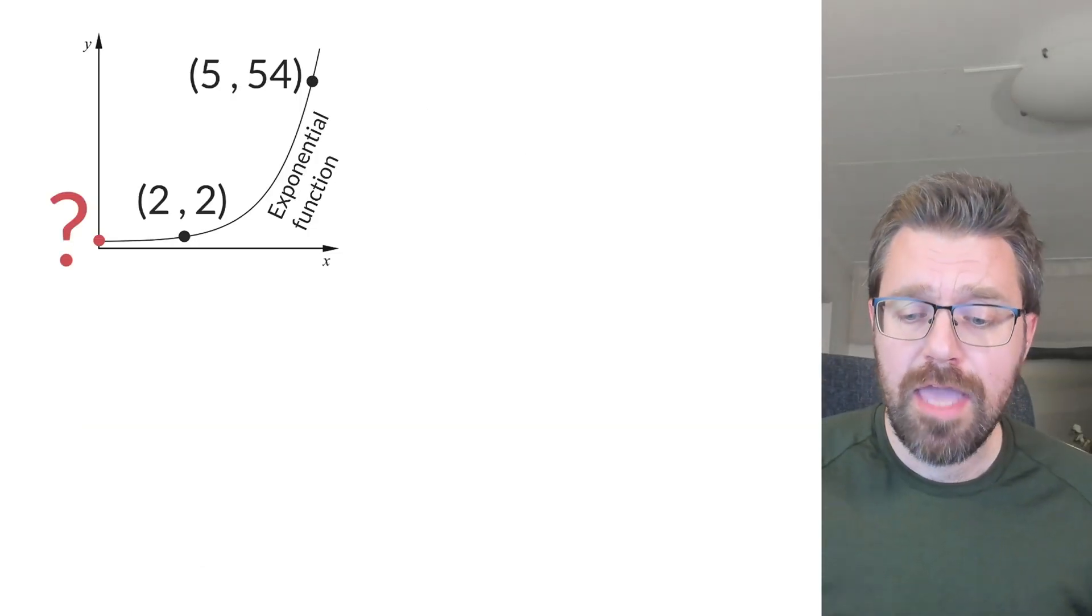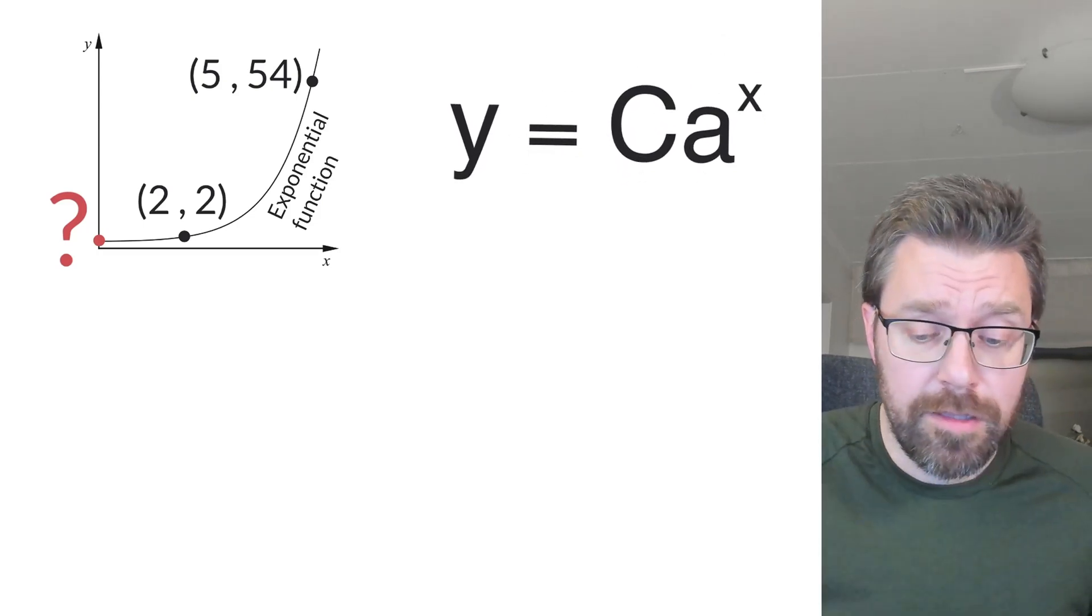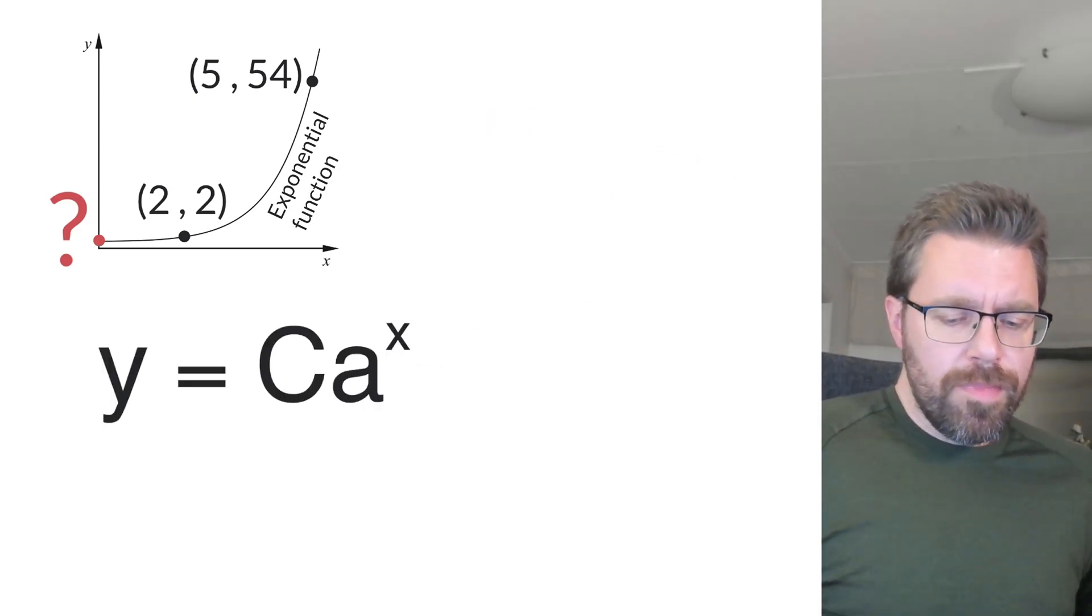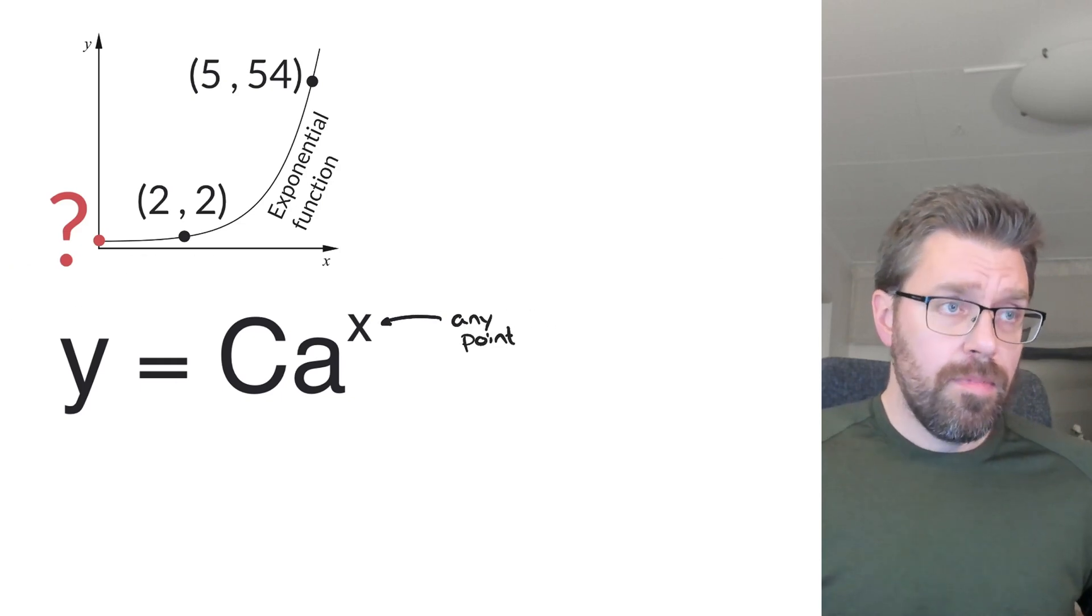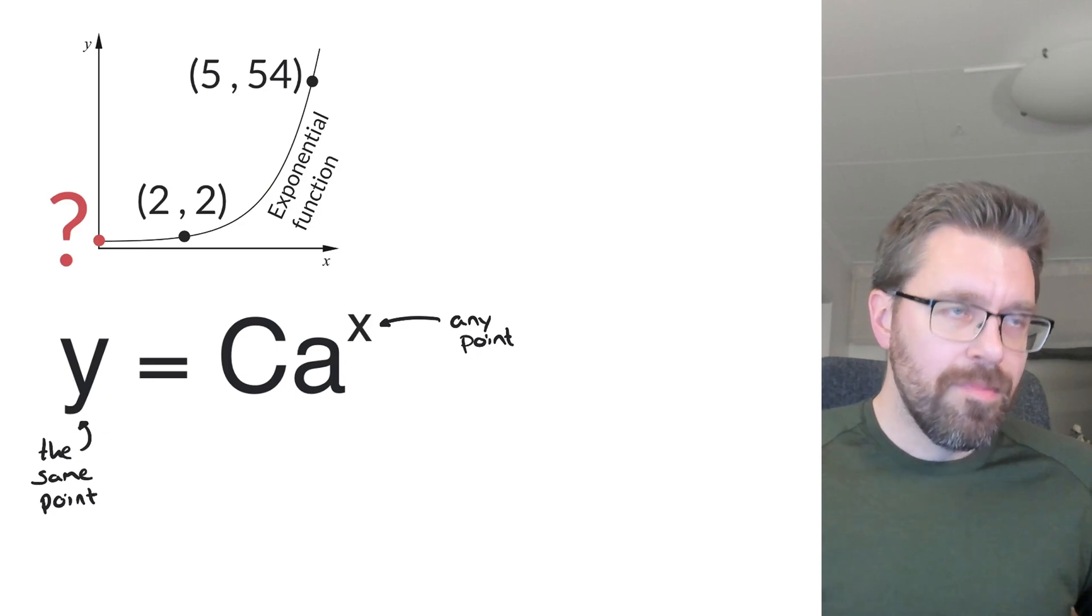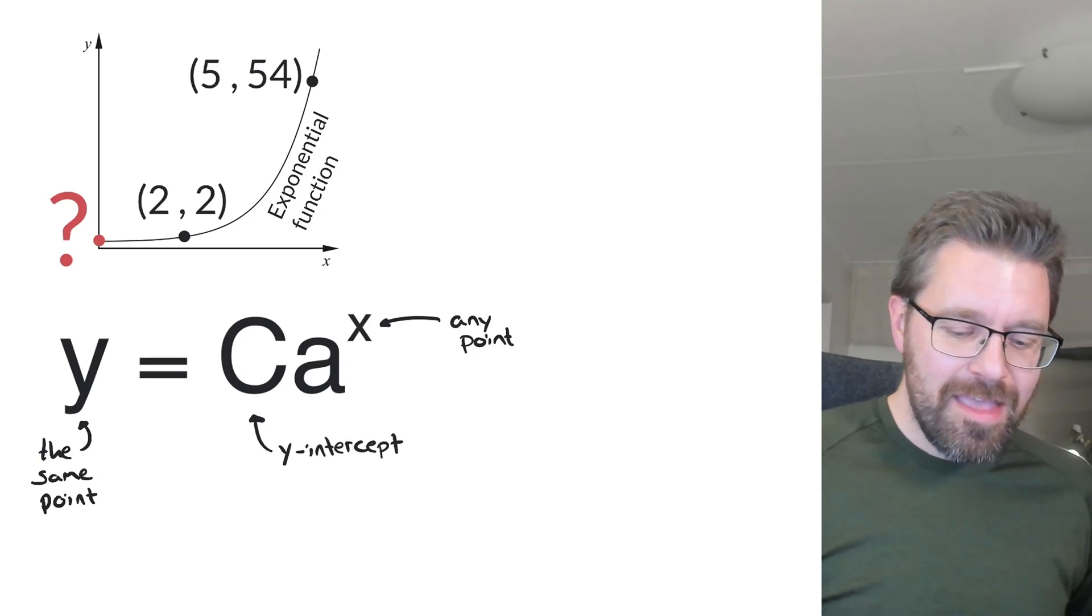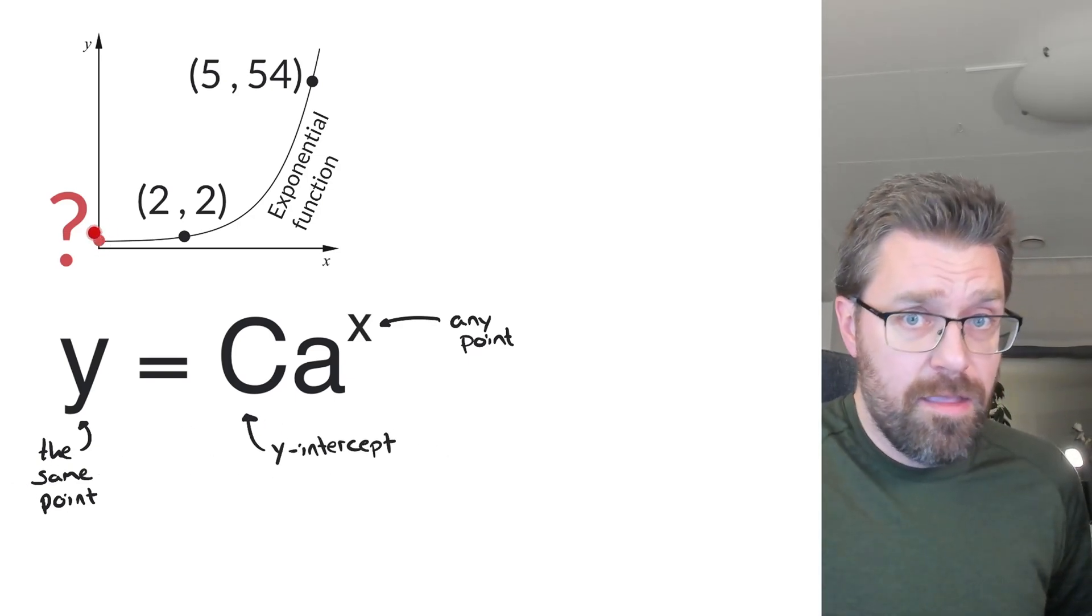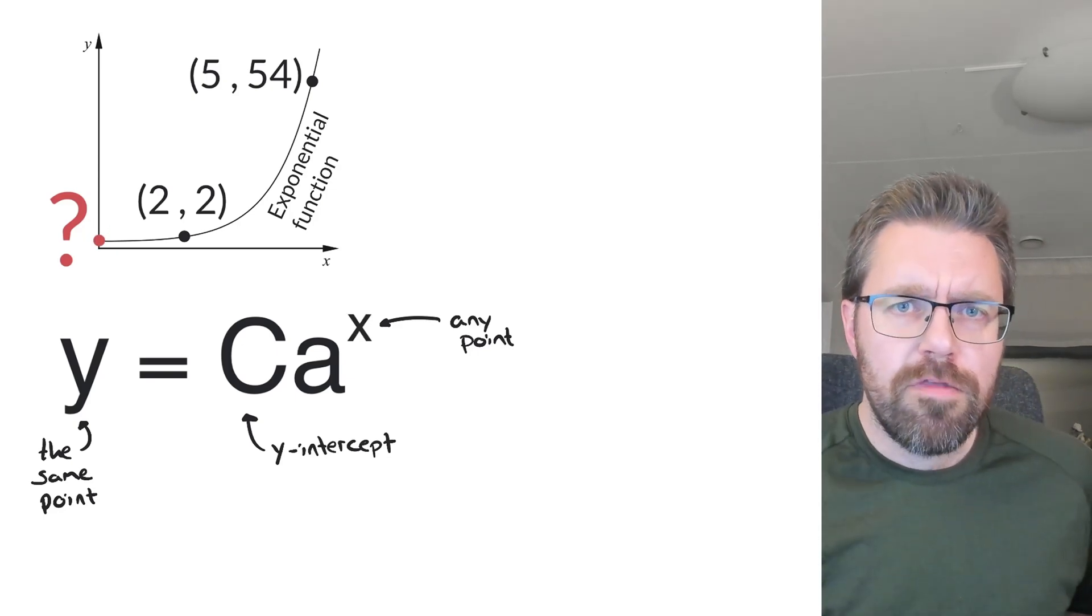Exponential functions can be written with these letters. They are usually the letters we choose in Sweden. So what does it stand for? x is any point on the graph, of course. y is the same point. In Sweden we call it e, not y, and c is the y-intercept we are looking for. c is the point here. And a is the growth factor.